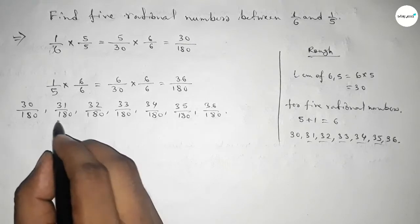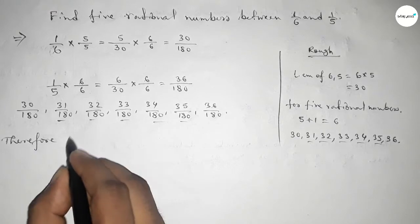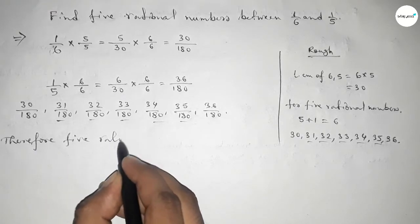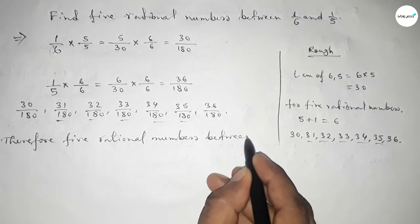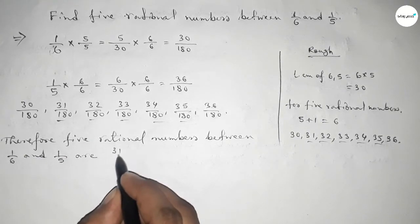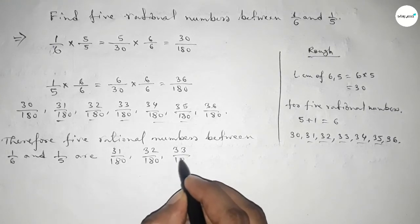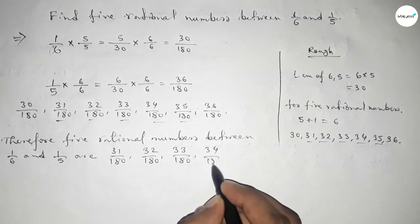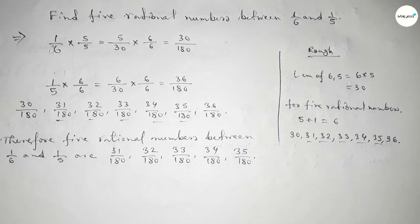And these are the required 5 rational numbers between 1 over 6 and 1 over 5. Therefore, 5 rational numbers between 1 over 6 and 1 over 5 are 31 over 180, 32 over 180, up to 35 over 180. So this is the process to find out 5 rational numbers between 1 over 6 and 1 over 5. That's all, thanks for watching.